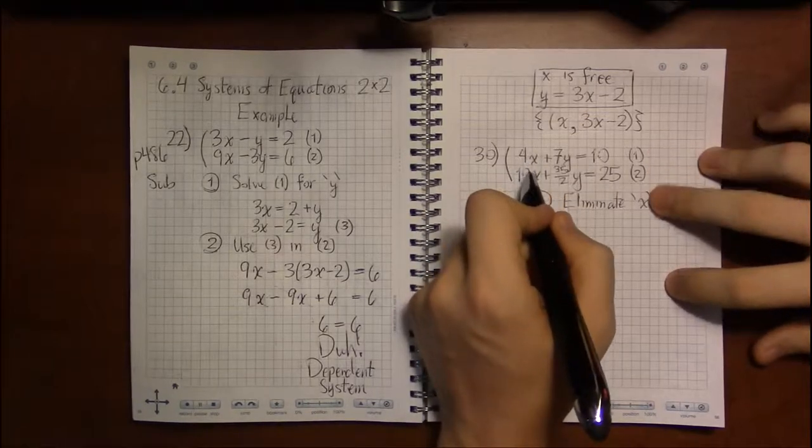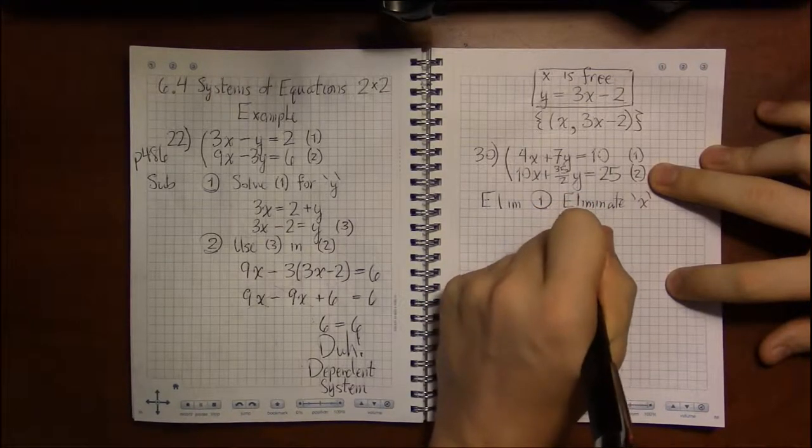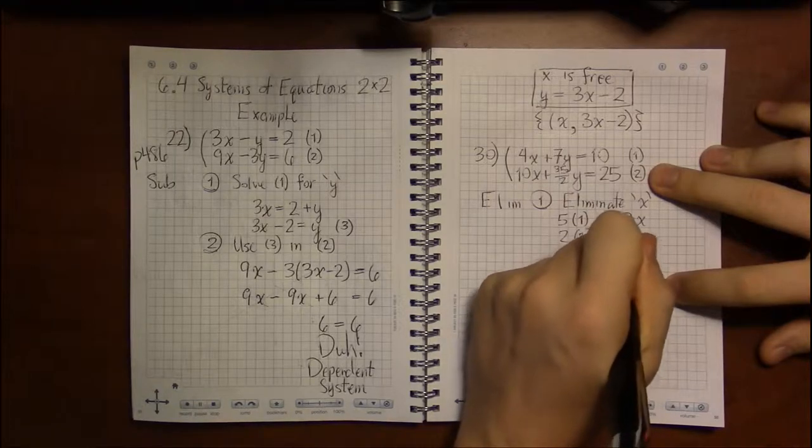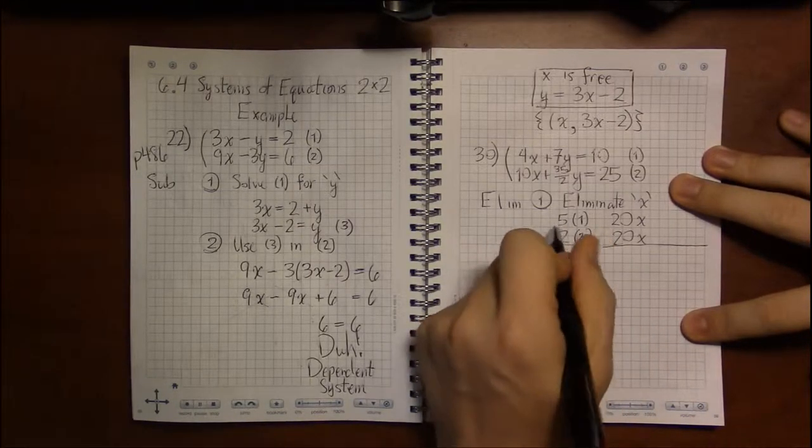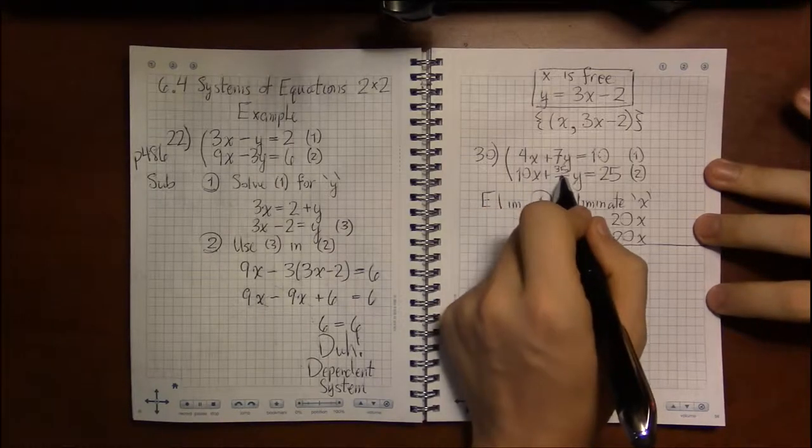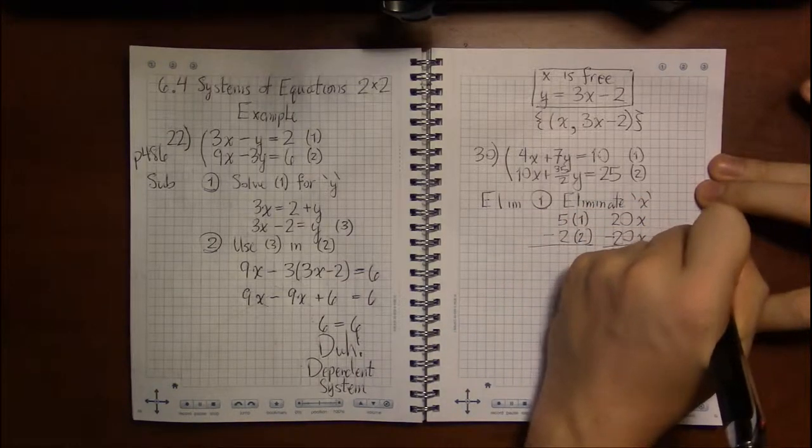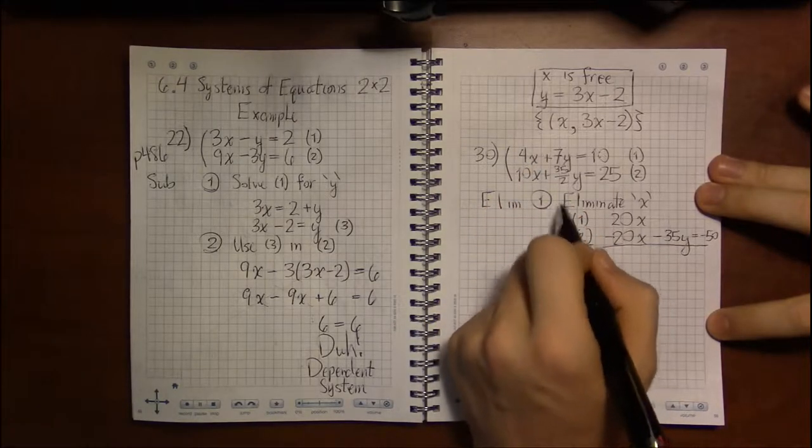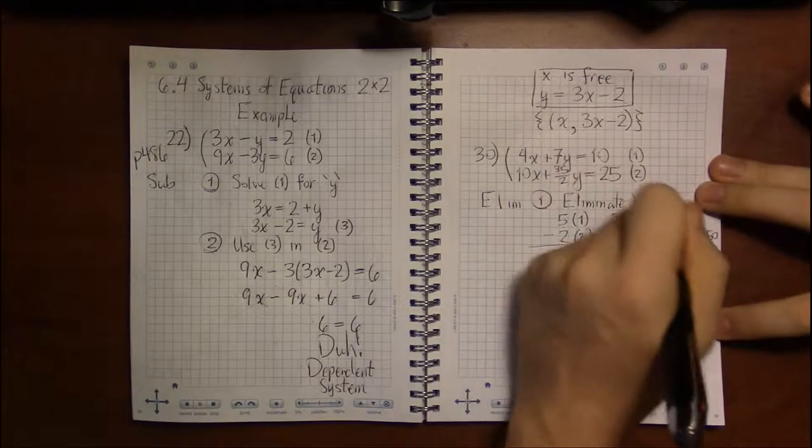Now the signs are the same on x in both equations, so I'm going to have to change them around when I'm multiplying here. 5 times 4 will give me 20, and 2 times 10 will give me 20. But in order to eliminate x, one of these 20s has to be negative, and it really doesn't matter which one. So I'll just pick the bottom one. I'm multiplying equation 2 by -2. Doing that gets me -35y and -2 times 25 is -50. Then let's take a look at 5 times equation 1: 5 times 7 is 35, and 5 times 10 is 50.